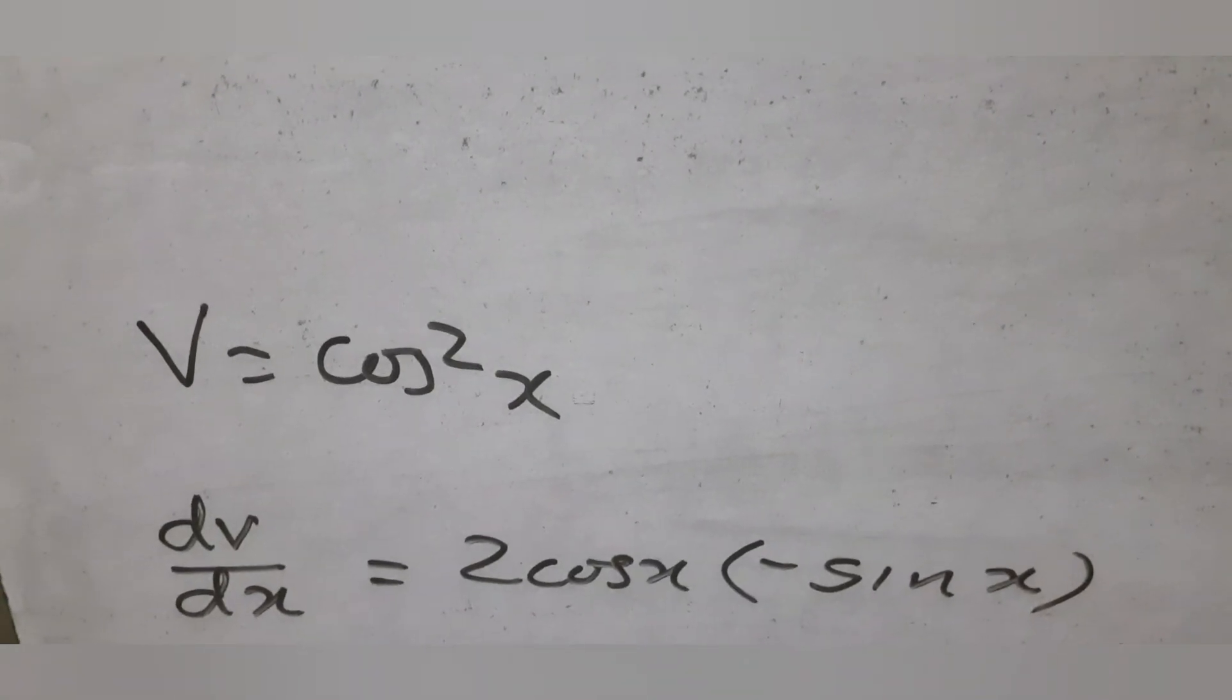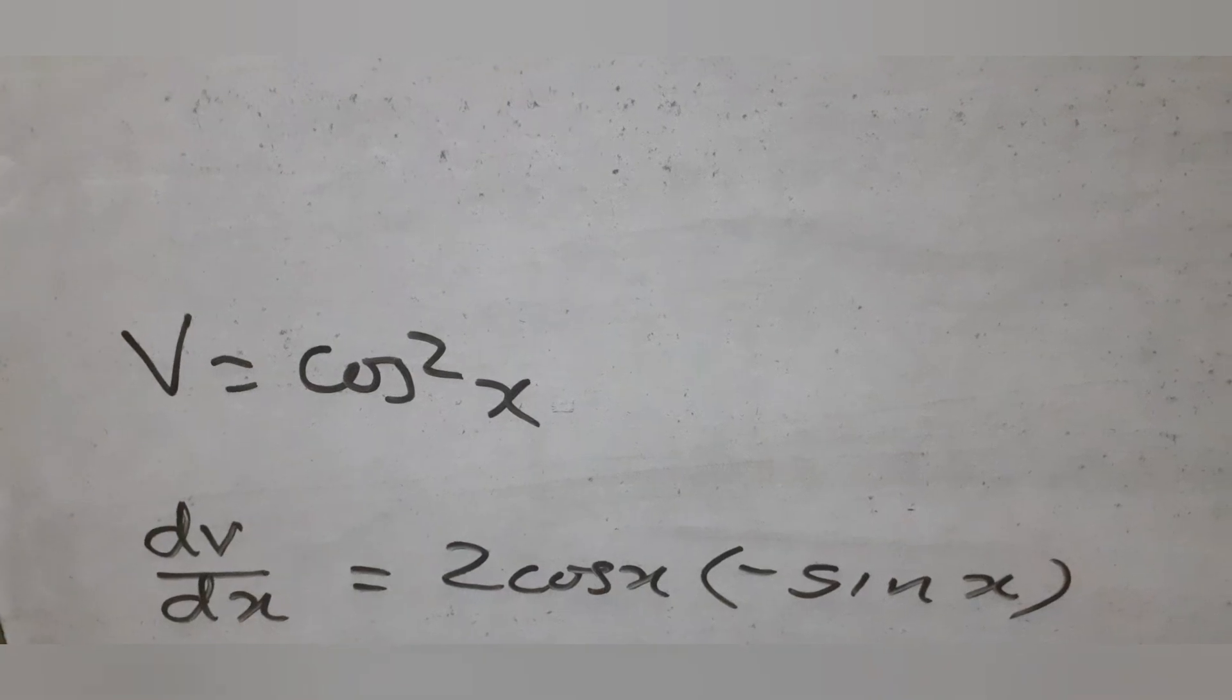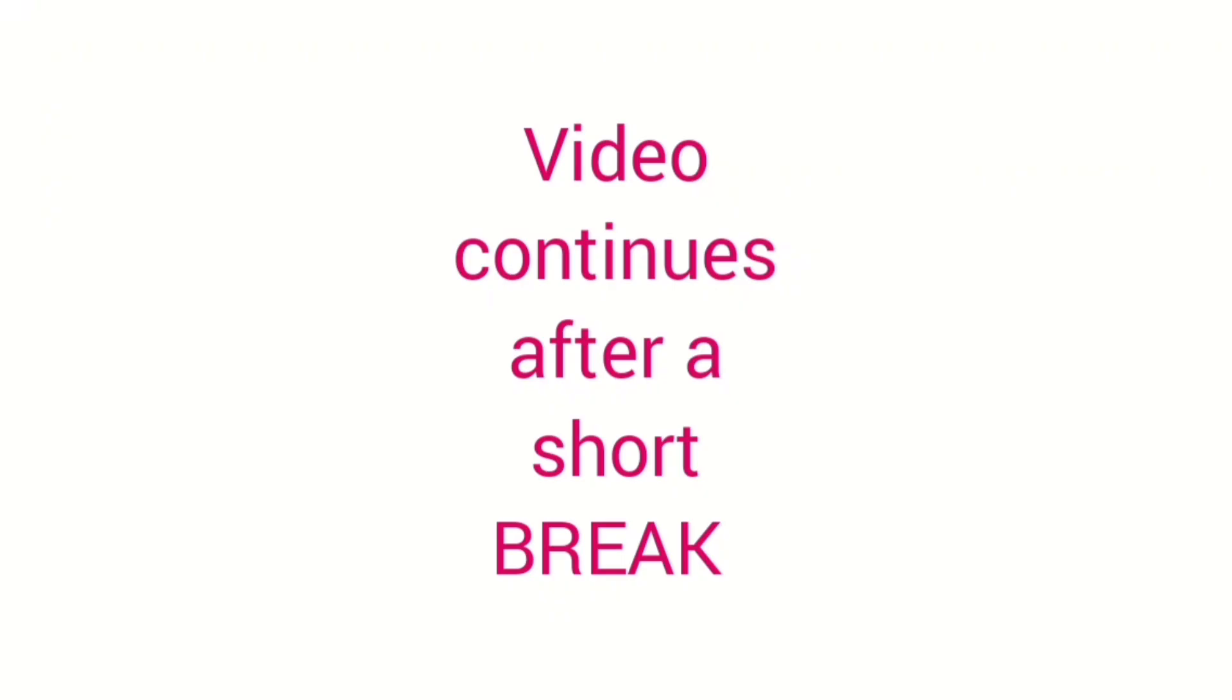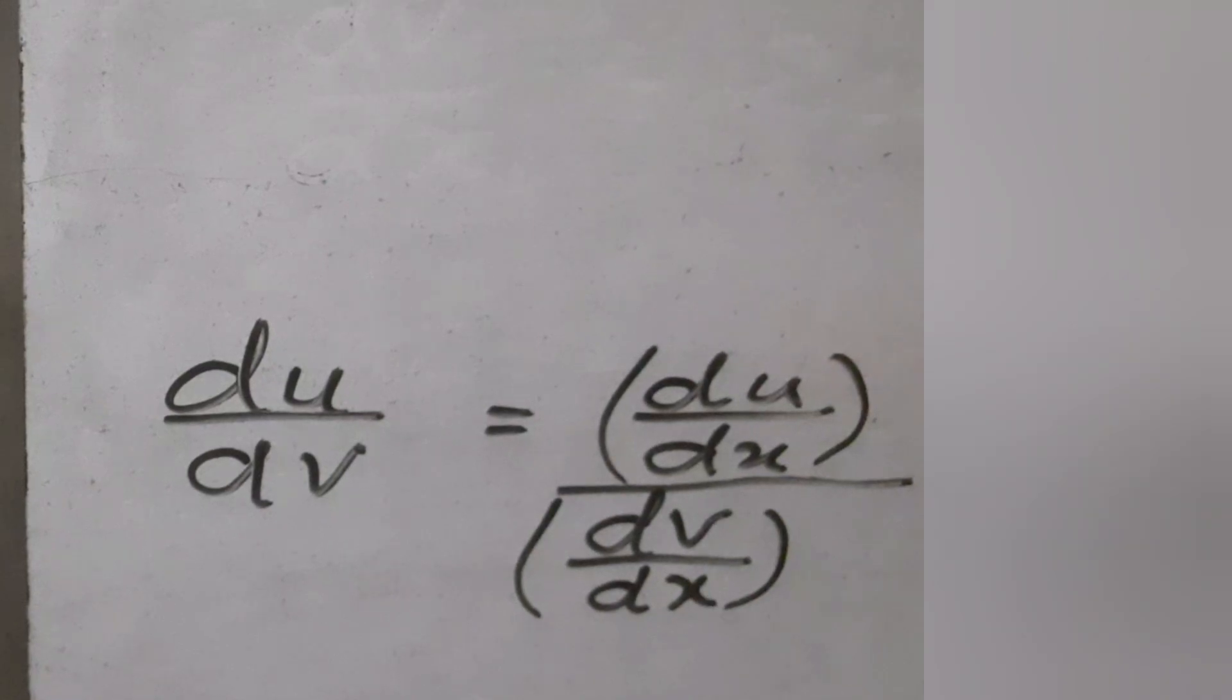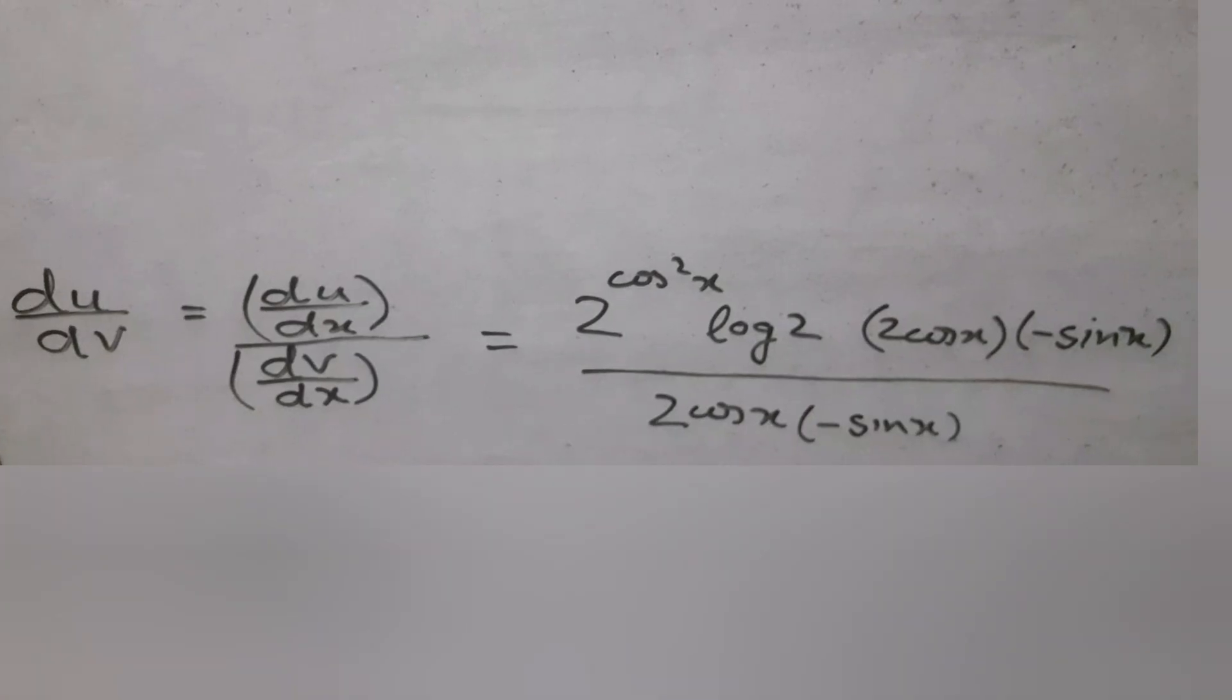Similarly v equal to cos square x and dv by dx will be 2 cos x into minus sin x. Substitute into du by dv equal to du by dx divided by dv by dx. Cancel the common factors.